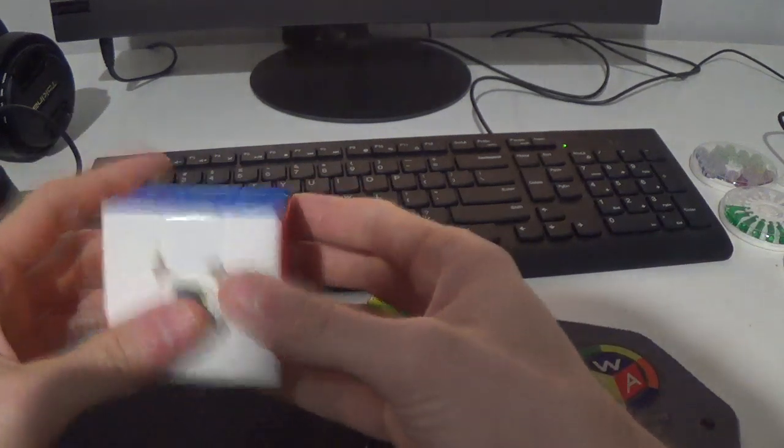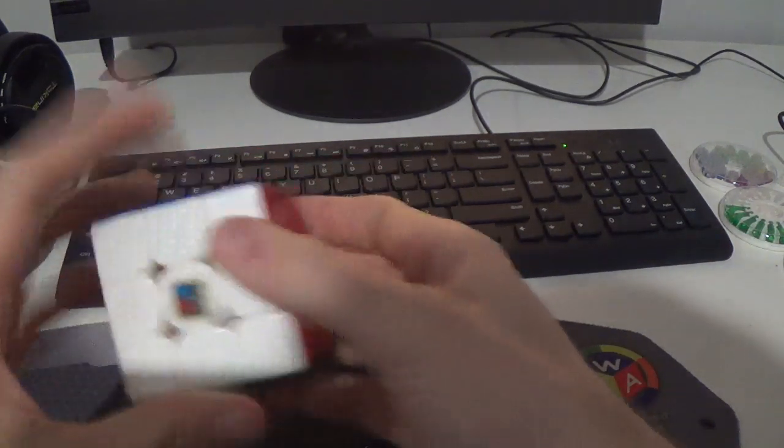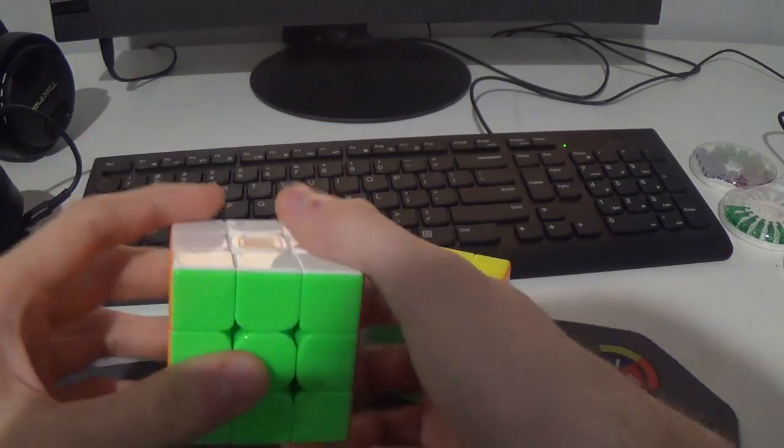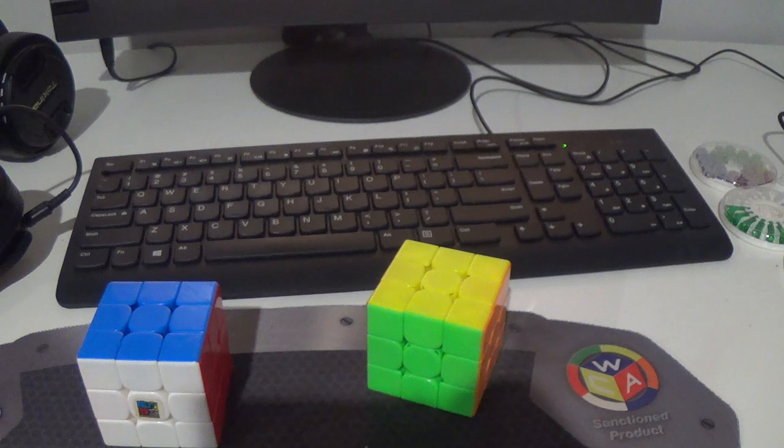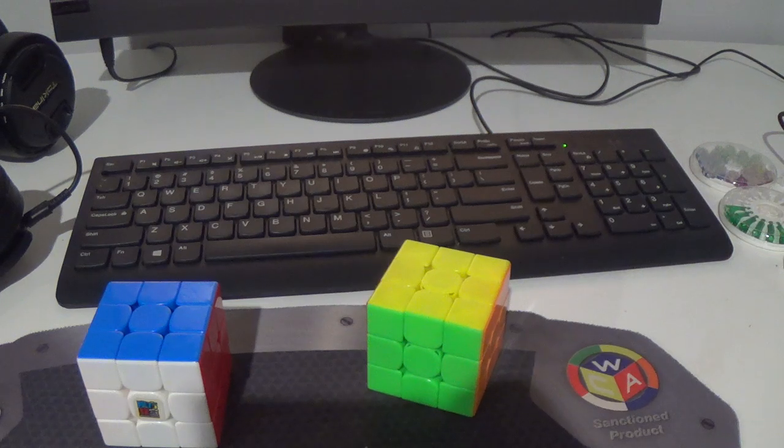And the difference between doing this and doing like this, it's basically one re-grip no matter what. Technically you're using two hands for the double rotation one, but in terms of actual speed, it's really not that bad. So that's why I personally rotate for A-perms, and that's why it's an exception to the rule for me.